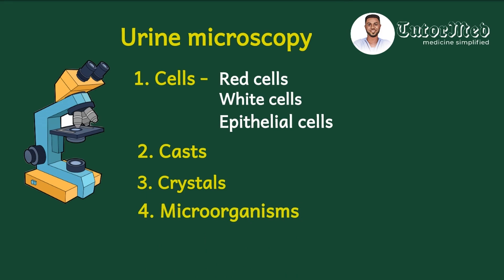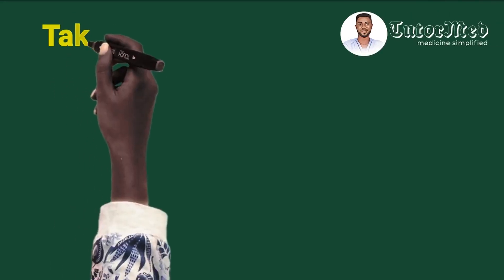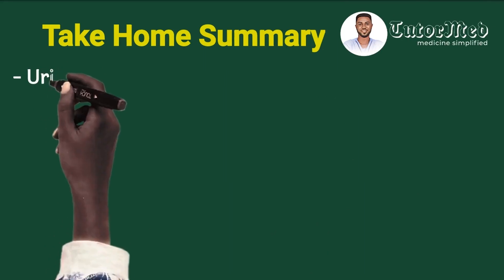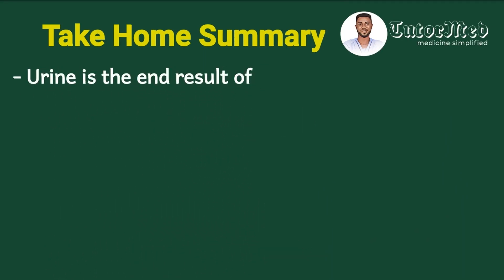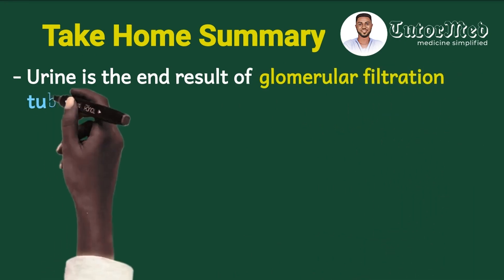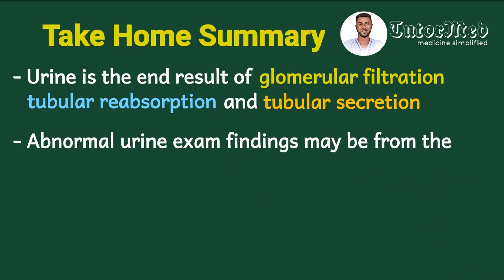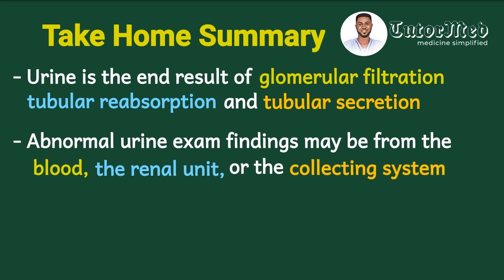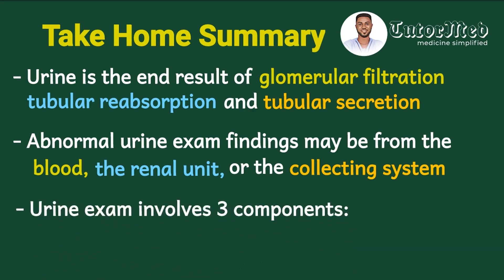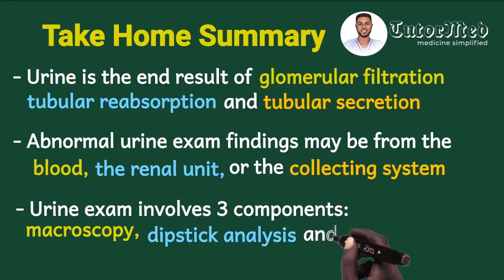Friends, here is our take-home summary. First, urine is the end product of three processes: glomerular filtration, tubular reabsorption, and tubular secretion. Second, abnormal urine exam findings may come from a condition that has affected the blood (like myoglobinemia), from the renal units or kidneys, or from the collection system (like the bladder). Third, urine exam or urinalysis involves three components: urine macroscopy, urine dipstick, and urine microscopy.